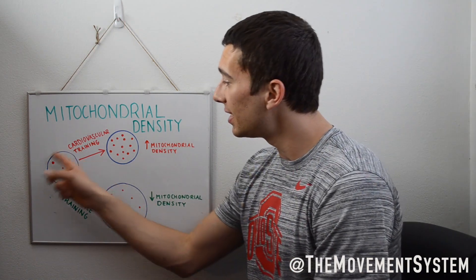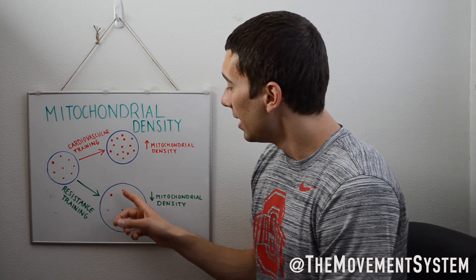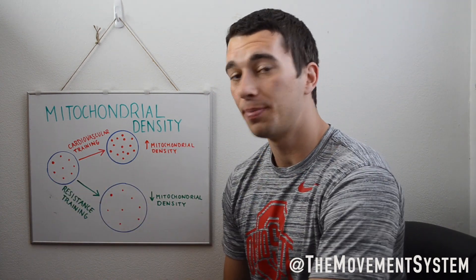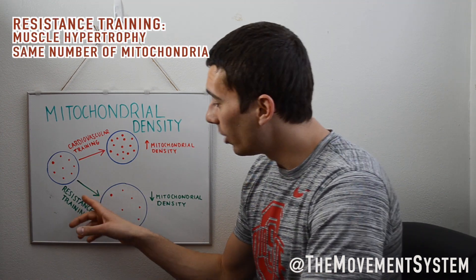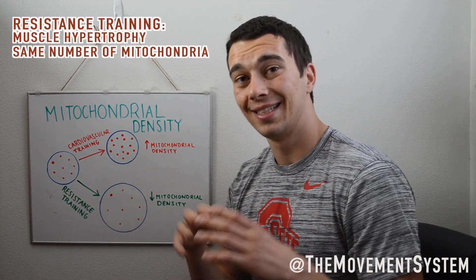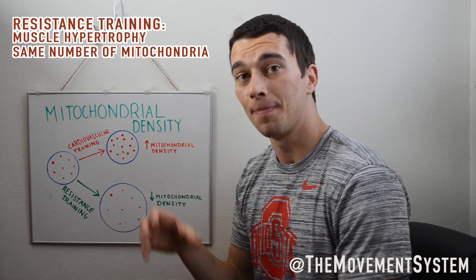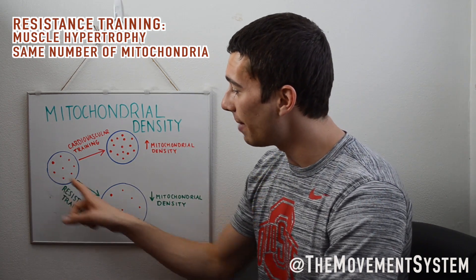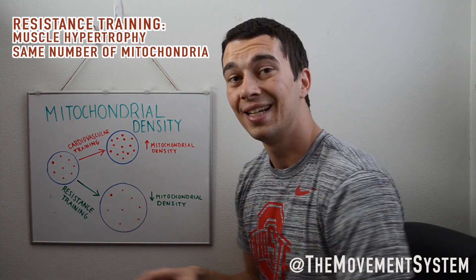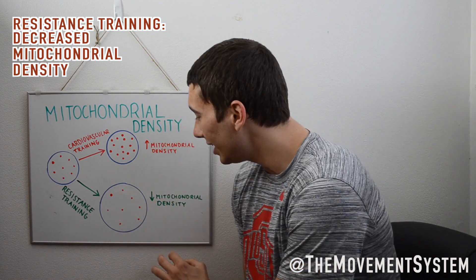Now, if instead this guy would have just done purely resistance training, what would have happened is 6-8 weeks goes by, he's just lifting weights — no running — the muscle size is going to increase. He's going to have some muscle hypertrophy; type 2 muscle fibers, type 1 muscle fibers, they're all going to get a little bit bigger with the same amount of mitochondria. There's the same amount and same size of mitochondria in a bigger muscle. Therefore, the mitochondrial density decreased.